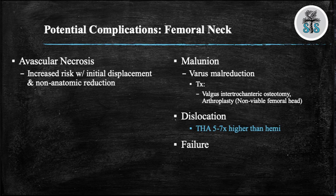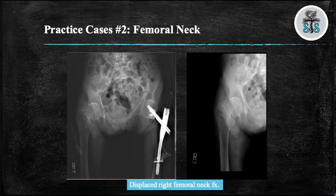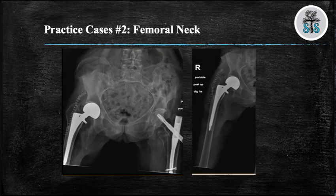We will finish our discussion on femoral neck fractures with a few practice cases. For each case, I recommend pausing the video and trying to read the x-rays yourself. Here we have two views, AP pelvis and AP right hip, demonstrating a displaced right femoral neck fracture. There are two different treatment options, but in this case it was treated with a right hemiarthroplasty.